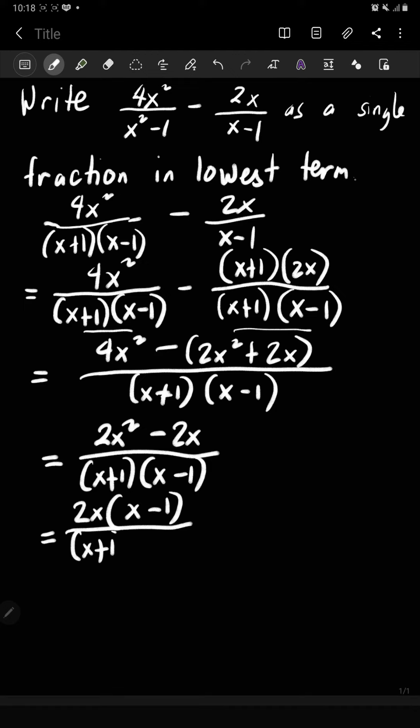So as you can see, numerator and denominator, they have common factor, which is x minus 1. So meaning to say, the answer in the simplest form is 2x over x plus 1.